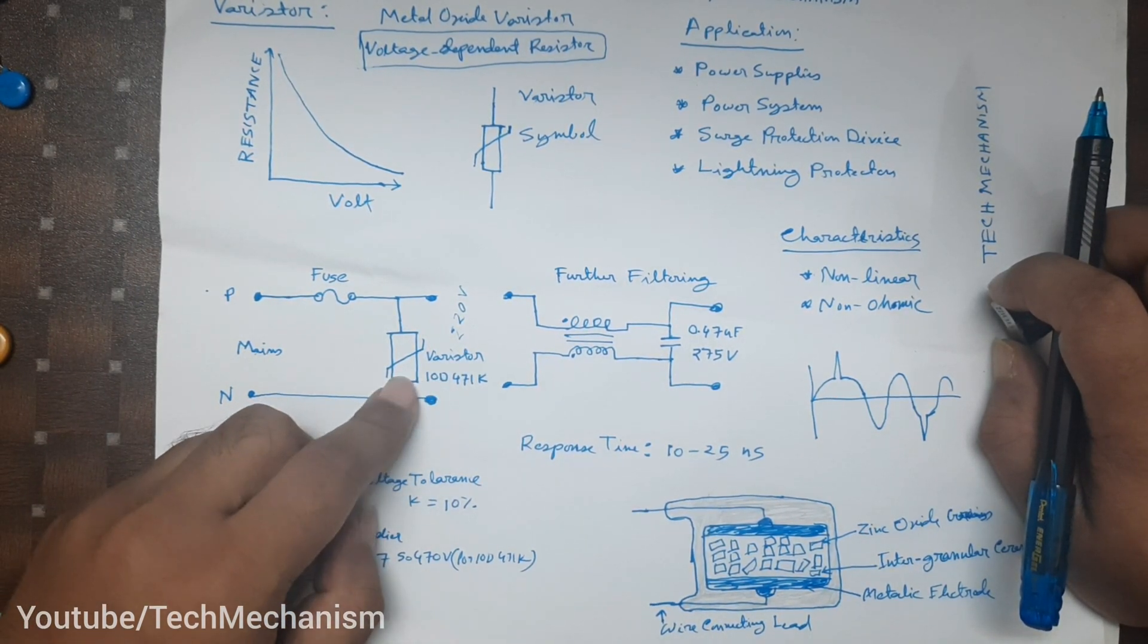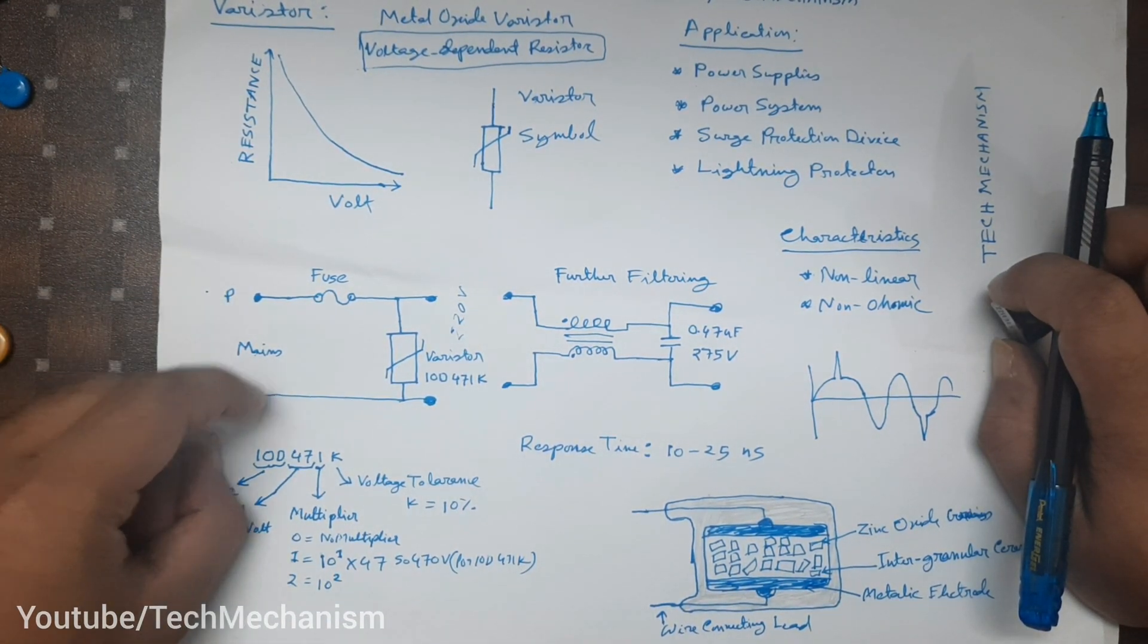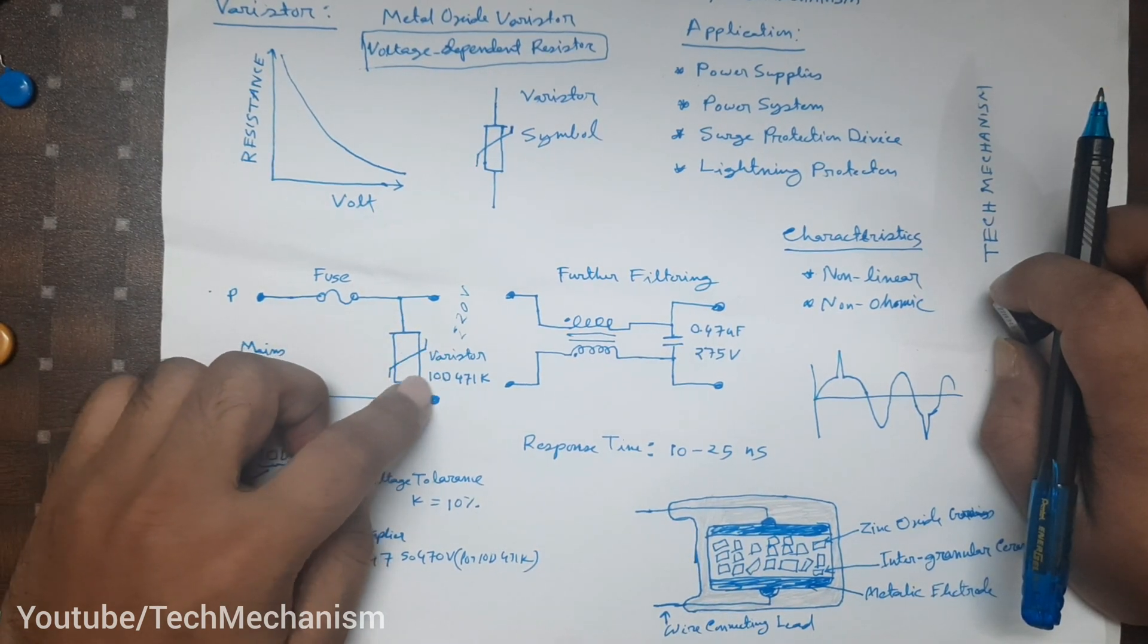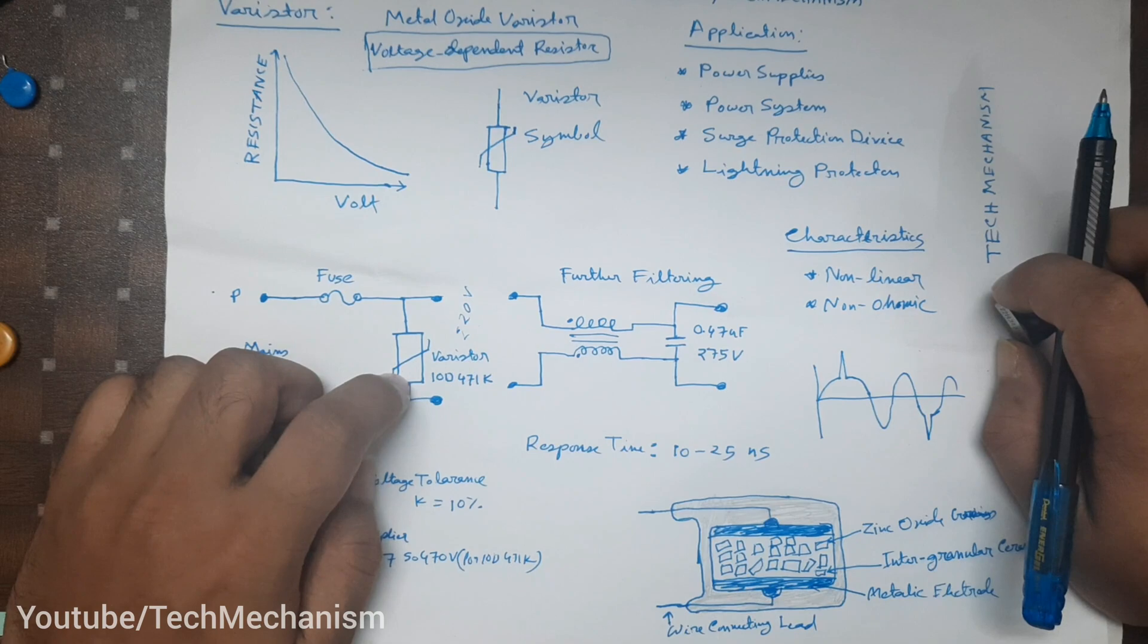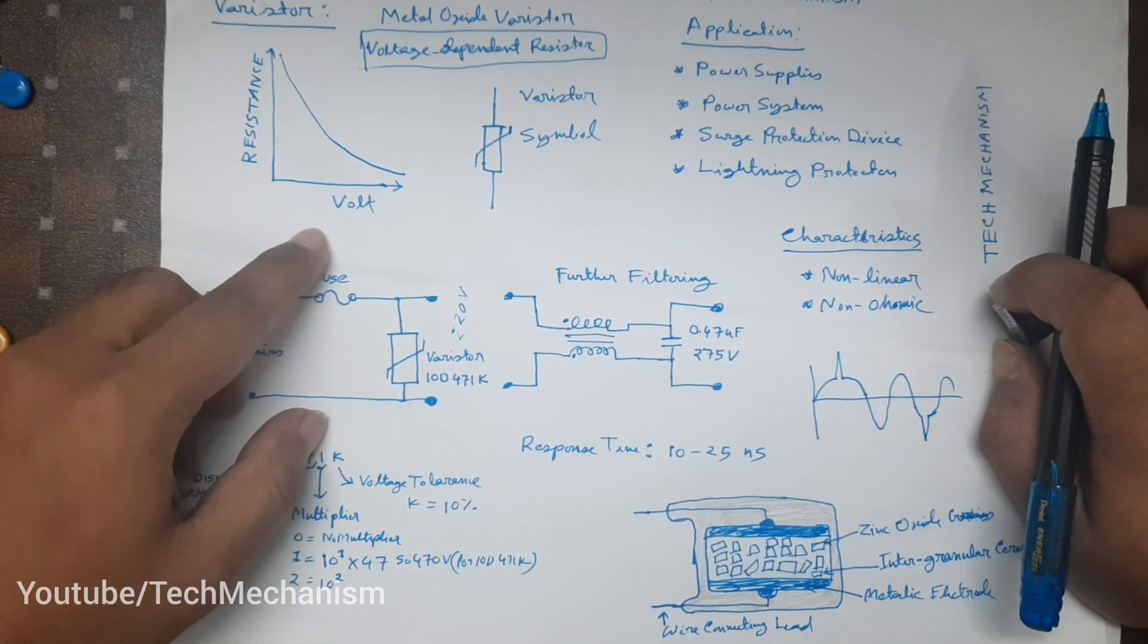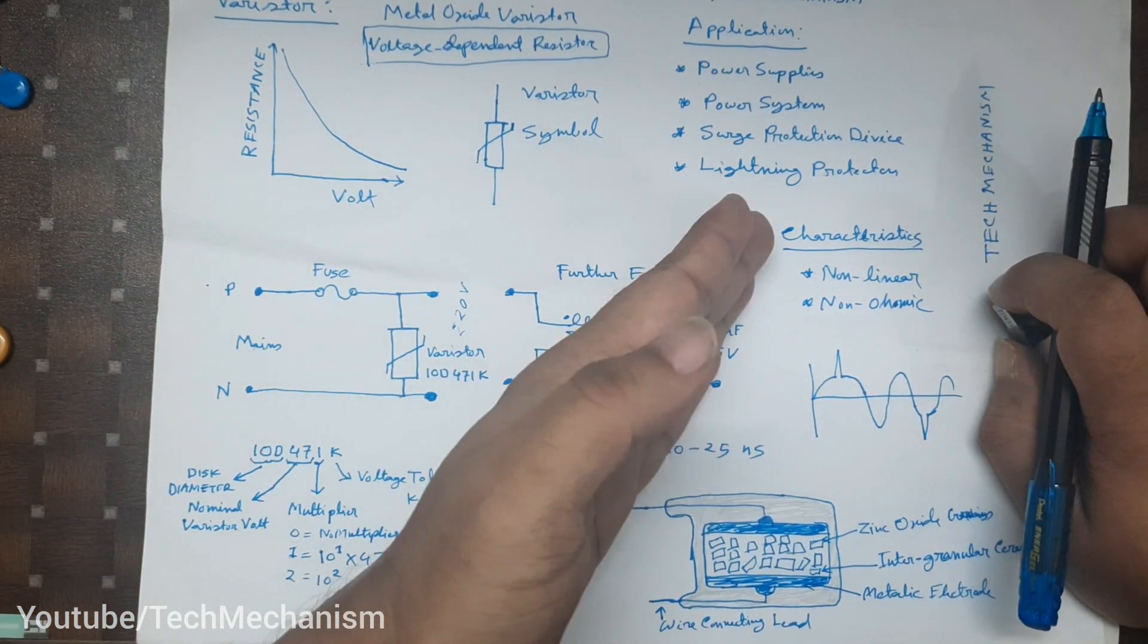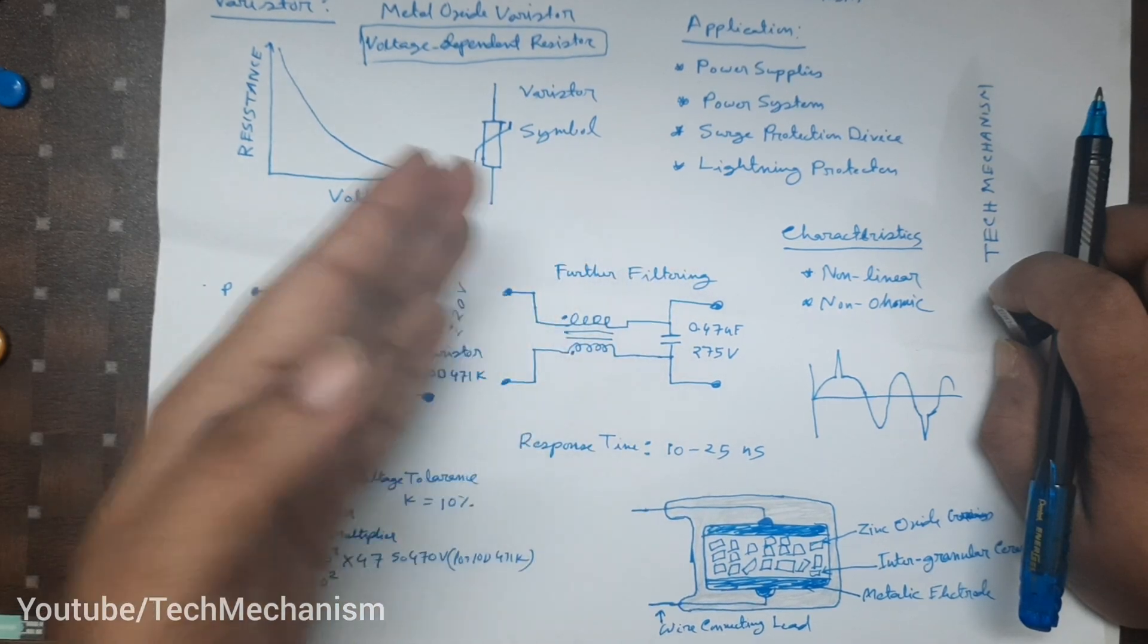We will use a fuse and a varistor. This is our phase and this is neutral. When the voltage reaches a certain level, the varistor will trigger and short circuit itself. If it short circuits here, the fuse will blow out. If the fuse blows up, the spike will not reach our electrical device, so our electrical device will be saved during the spike.